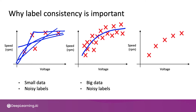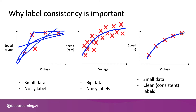The interesting case is: what if you still have a small dataset — five examples, same as the example on the left — but you now have clean and consistent labels? In this case, you can pretty confidently fit a function through your data. And with only five examples, you can build a pretty good model for predicting speed as a function of the input voltage. I've trained computer vision systems with just 30 images and had it work just fine. The key is usually to make sure that the labels are clean and consistent.